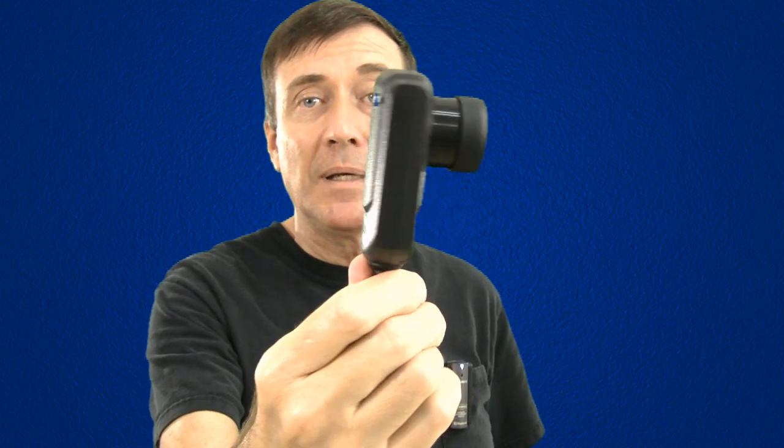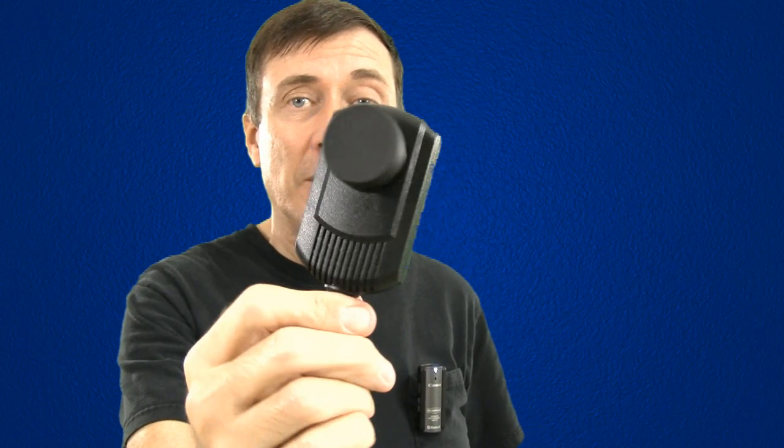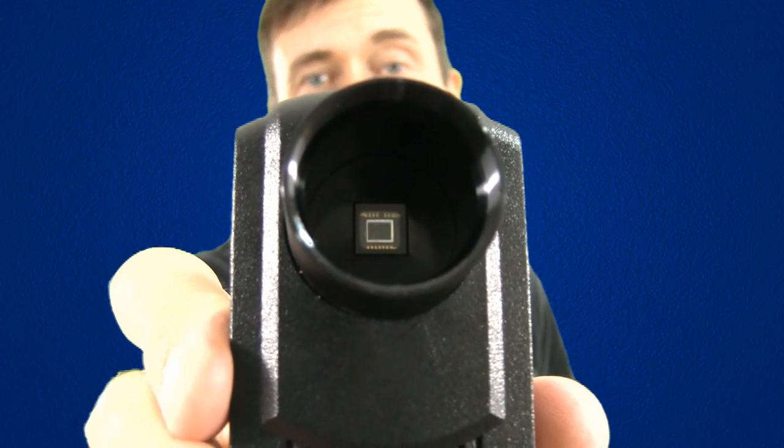For imaging the planets, I use Celestron's NexImage cameras. These are basically just web cameras without a lens. This is the original NexImage camera that came out. It's no longer sold. It has a 0.3 megapixel chip which is 640 by 480. You can see it's very tiny, which is what you want for imaging planets.